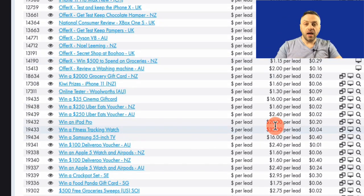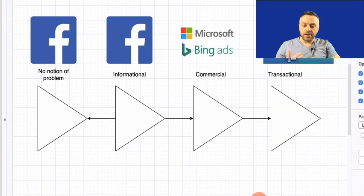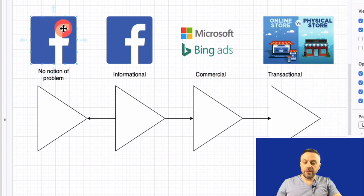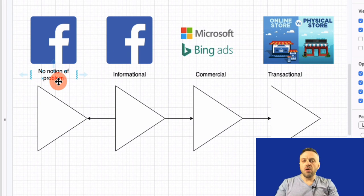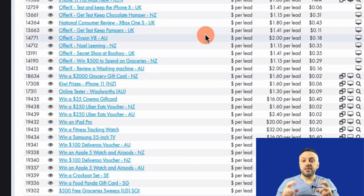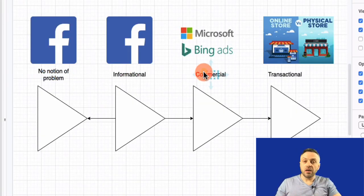When promoting with Bing Ads or Google Ads and bidding for keywords, you want a high payout but you also want products — you want commercial stuff. You don't want sweepstakes because sweepstakes are not commercial intent. Remember our diagram — people searching for sweepstakes are basically at the first stage. They don't have a problem; they're not looking for a solution. They're not commercially viable.